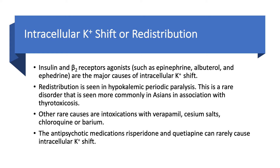You can also see redistribution in hypokalemic periodic paralysis. You'll be lucky to see one case in your whole career, but you have to know about it — it's common on a test. It's rare and happens usually in Asians with thyrotoxicosis. Other rare causes include verapamil, cesium salts, chloroquine, or barium, all of which can cause intoxication and hypokalemia. Antipsychotics like risperidone and quetiapine can rarely cause hypokalemia by intracellular potassium shifts. But again, the key ones to remember are insulin and beta-2 receptor agonists — albuterol and insulin.